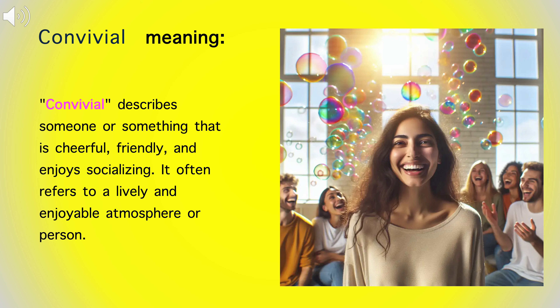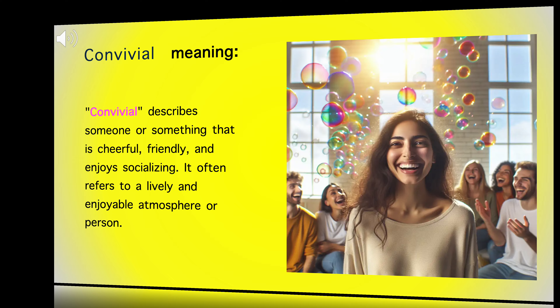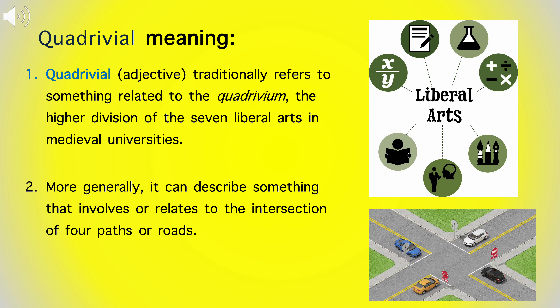Convivial describes someone or something that is cheerful, friendly, and enjoys socializing. It often refers to a lively and enjoyable atmosphere or person. Quadrivial, as an adjective, traditionally refers to something related to the quadrivium, the higher division of the seven liberal arts in medieval universities. More generally, it can describe something that involves or relates to the intersection of four paths or roads.